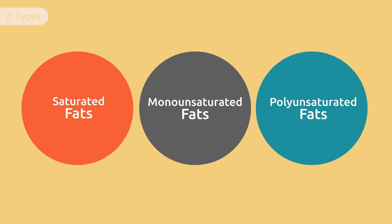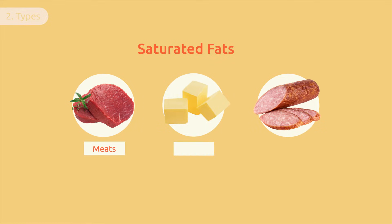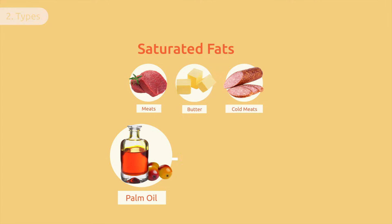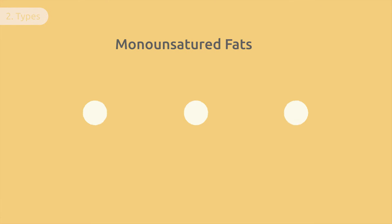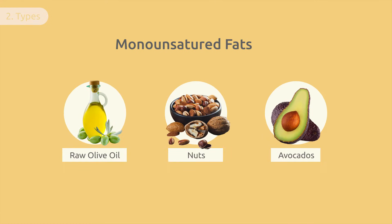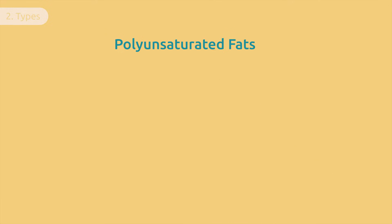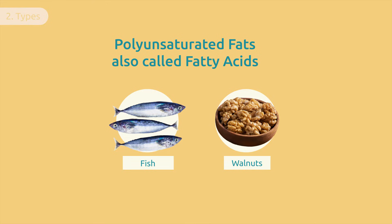Fats are divided into three different groups depending on their chemical structure. Saturated fats are found in animal-based foods like meats, butter, and cold meats. Palm oil, which is an ingredient used in packaged pastries, is also rich in fats. Monounsaturated fats are found in foods like raw olive oil, nuts,